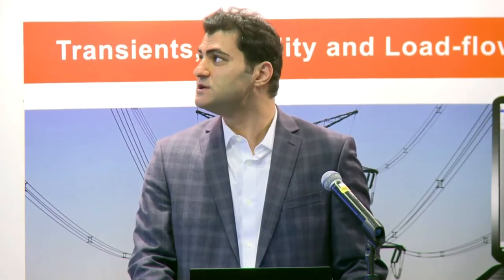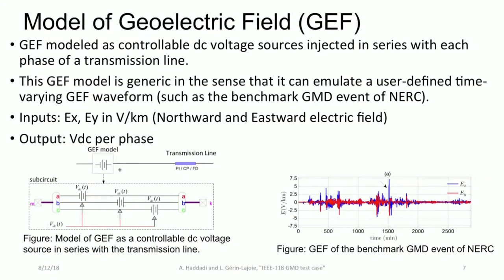To run GMD simulations in EMTP, we first need to model the geo-electric field — the DC voltages induced on transmission lines due to the magnetic field. In EMTP, we are able to model a user-defined time-varying GEF waveform. In other packages, you can only model a DC constant geo-electric field, but here we are not bound by that. For example, here is the GEF waveform of the NERC benchmark GMD event, which is highly time-varying.